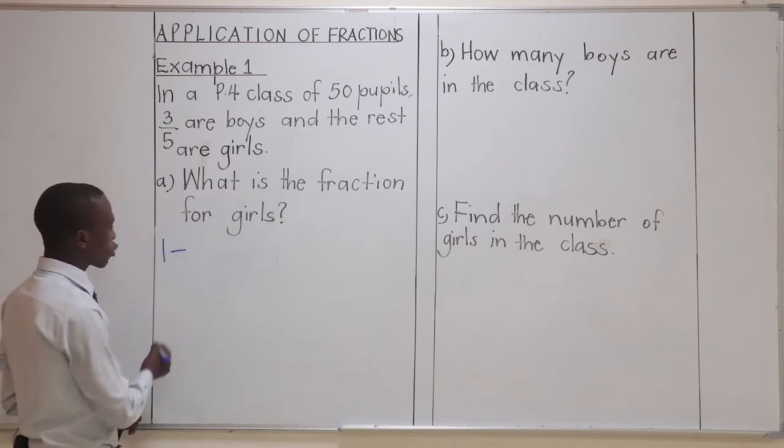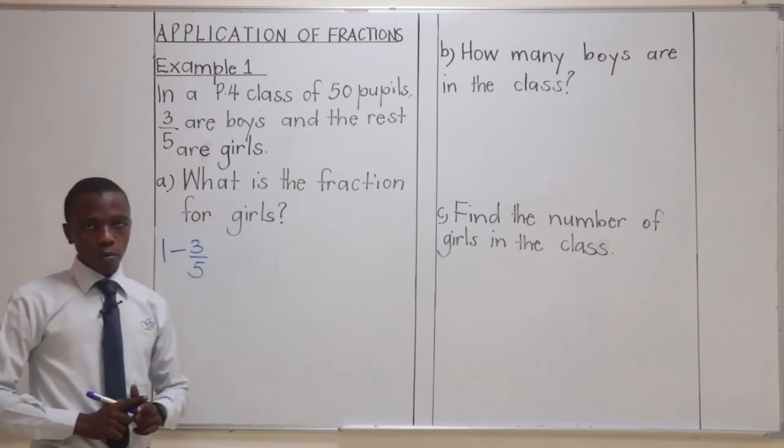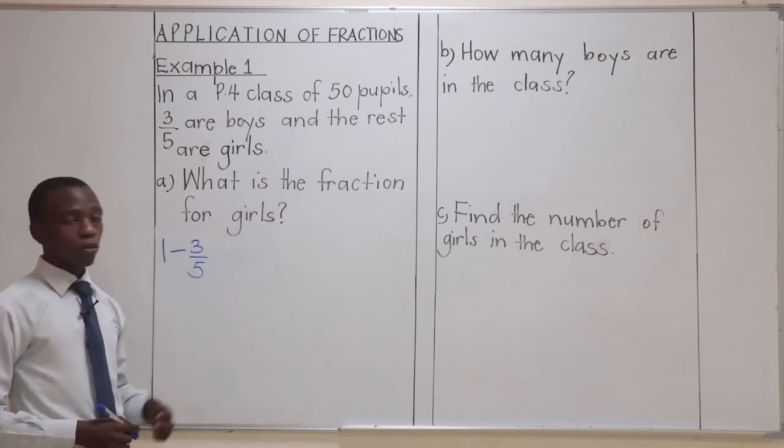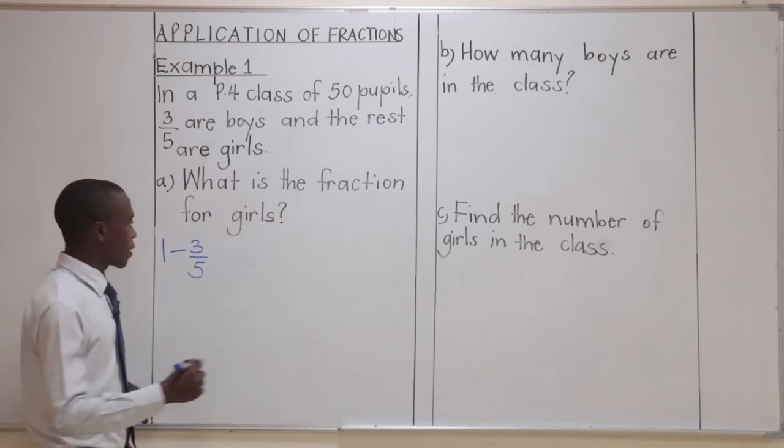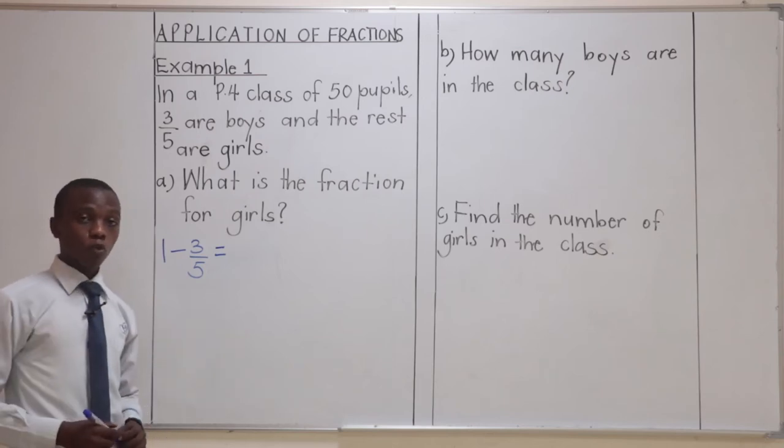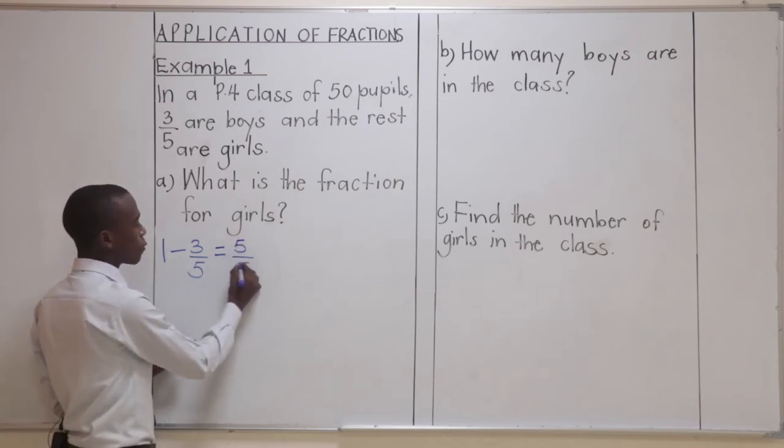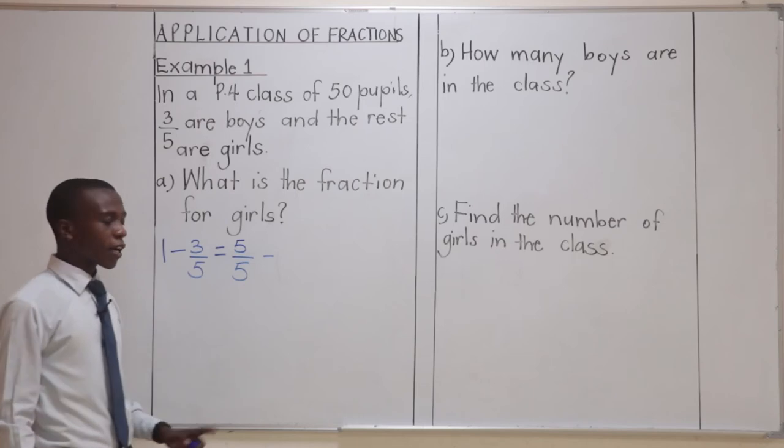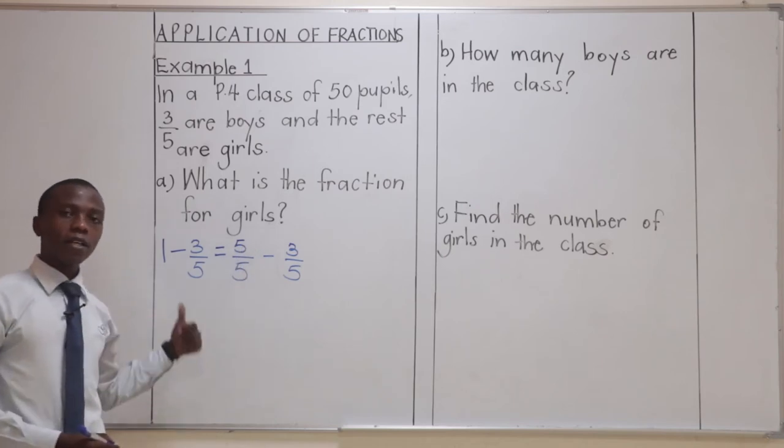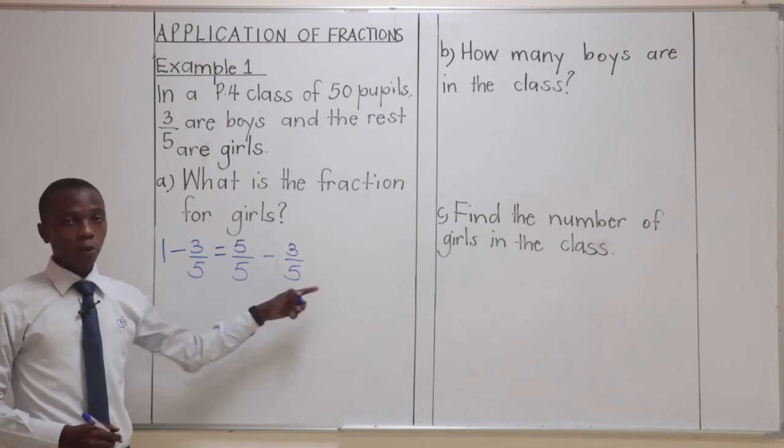We'll simply get our whole, which is now represented as 1, then we take away the fraction for the boys, which is 3 out of 5. You remember when we were looking at calculations like this, we say a fraction that can represent a whole will be according to the denominator of this given fraction, and it will be a fraction whose numerator is the same as the denominator. Therefore, it would be 5 out of 5. Then we take away this given fraction, which is 3 out of 5. Now, 5 out of 5 is the same as 1, right? So, we are saying this is a whole written as a fraction.